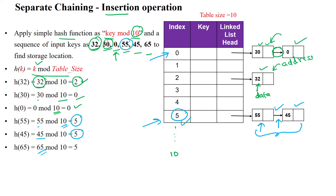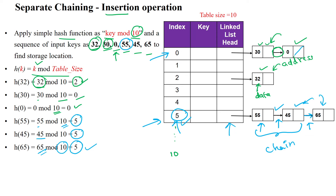Next, inserting 65: 65 mod 10 also gives index 5, so 65 is inserted at the same index. A link is created between the existing node and the newly created node. This is how insertion is done by forming a chain of nodes within the same bucket of the hash table.